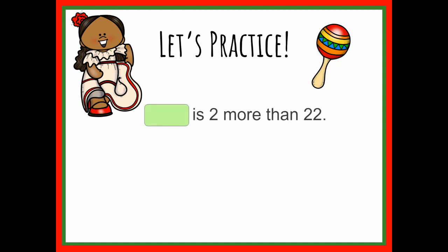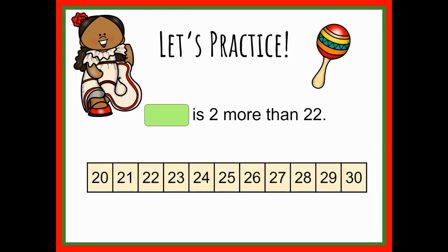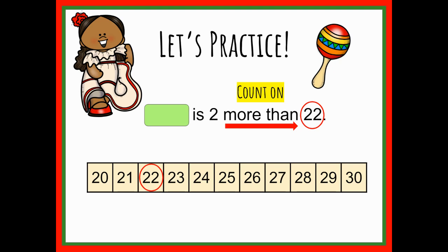Now let's do a few together. Blank is two more than 22. First we're going to bring in the number line and use 22 as our starting point — I've circled that in red. Starting on the number 22, 'more than' means we're going to hop forward on the number line, counting on, moving to the right. The number two is our hopping number, shown with a green frog. Starting at 22, we count one hop, two hops — or 23, 24 — landing on 24. So 24 is two more than 22.